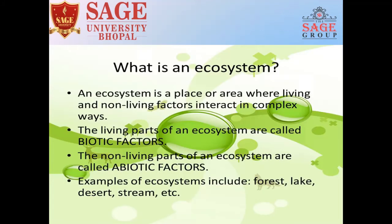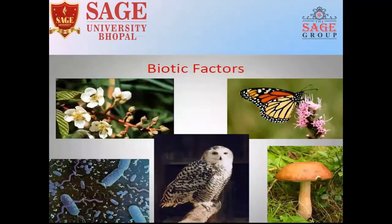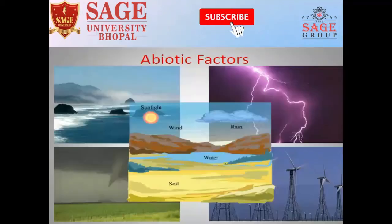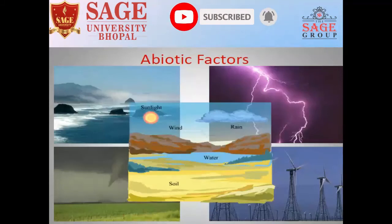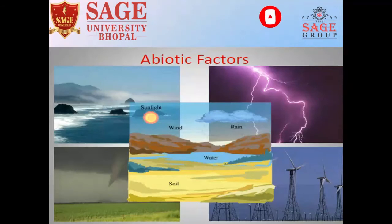What is an Ecosystem? An ecosystem is a place or area where living and non-living factors interact in complex ways. The living part of an ecosystem is called biotic factors and the non-living part is called abiotic factors. Examples of ecosystems include forest, lake, desert, stream, and many more. Biotic factors include all living things, while abiotic factors include sunlight, wind, rain, water, and soil.